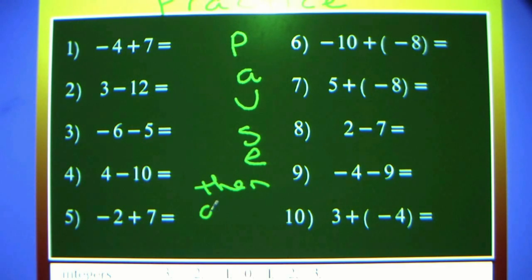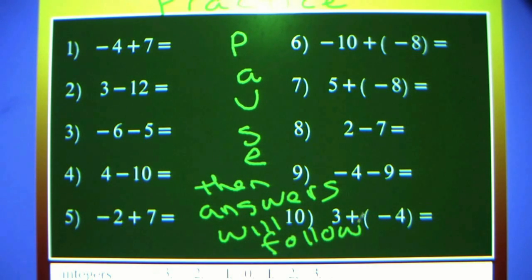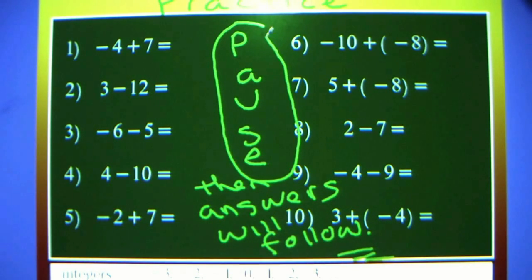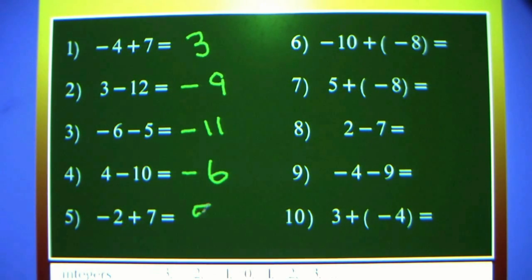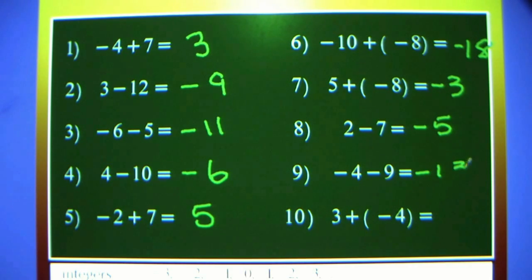The first one — 4 minus signs, 7 positives: cancel, cancel, cancel, cancel. Get all ten of them right. You'll need paper and pencil like you always do to prove the answers are right. Three minus twelve: negative 9. Negative 6 minus 5: negative 11. 4 minus 6: negative 10. Negative 2 plus 7 is 5. Negative 10 plus negative 8 is negative 18. 5 plus negative 8 is negative 3. 2 minus 7: negative 5. Negative 4 minus 9 is negative 13. And 3 plus negative 4: negative 1. Pause it and check your answers.